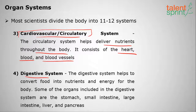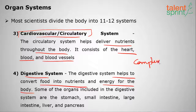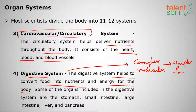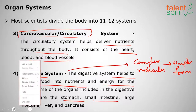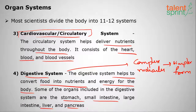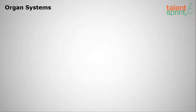The fourth organ system is the digestive system. It helps convert food into nutrients; complex molecules are broken down into simpler forms. Some of the organs in the digestive system include the stomach, small intestine, large intestine, liver, and pancreas.